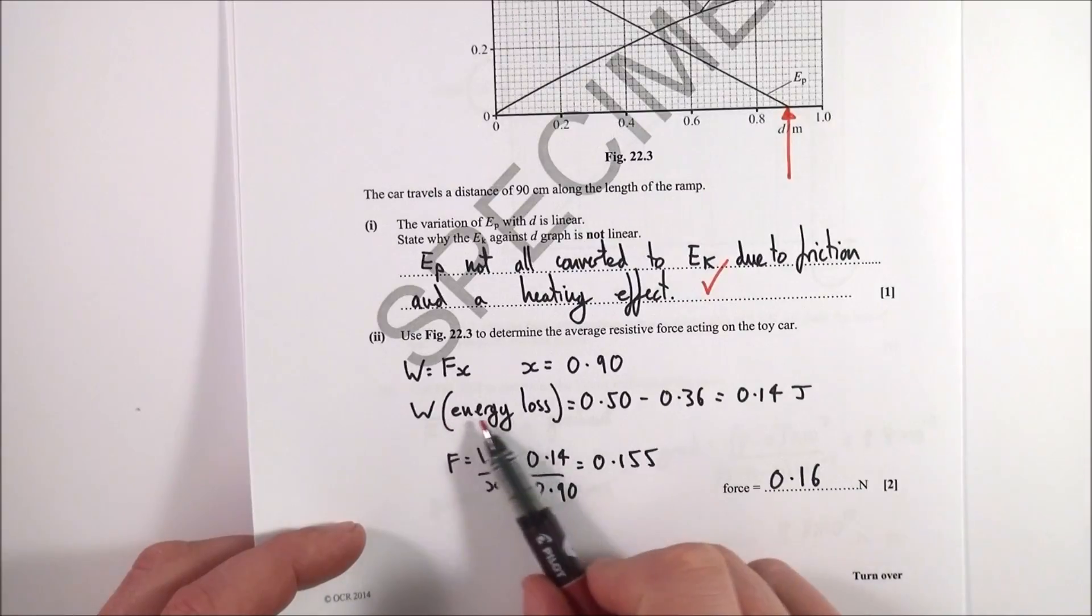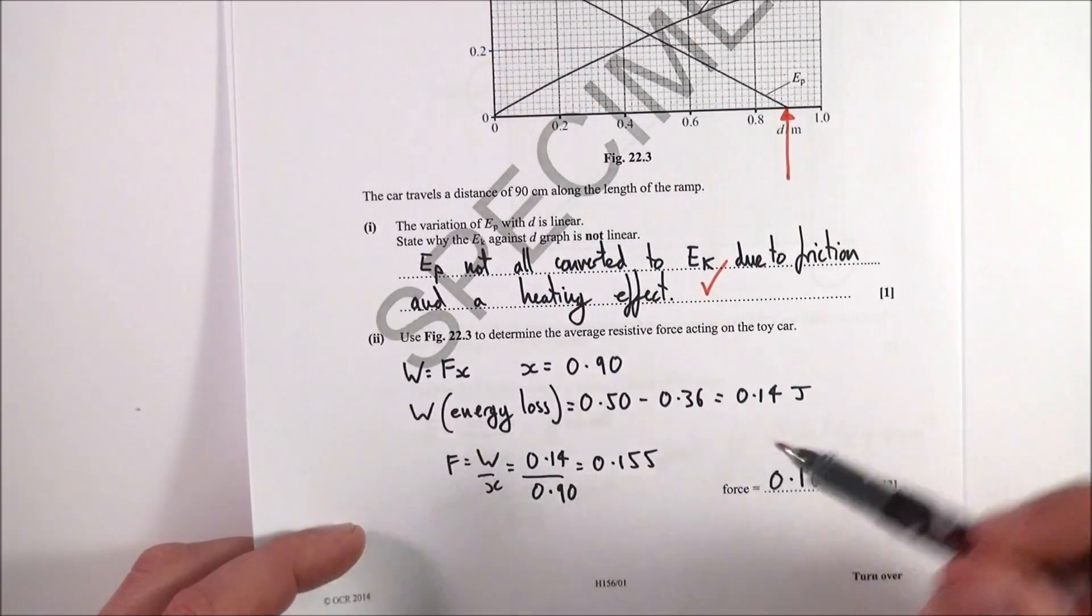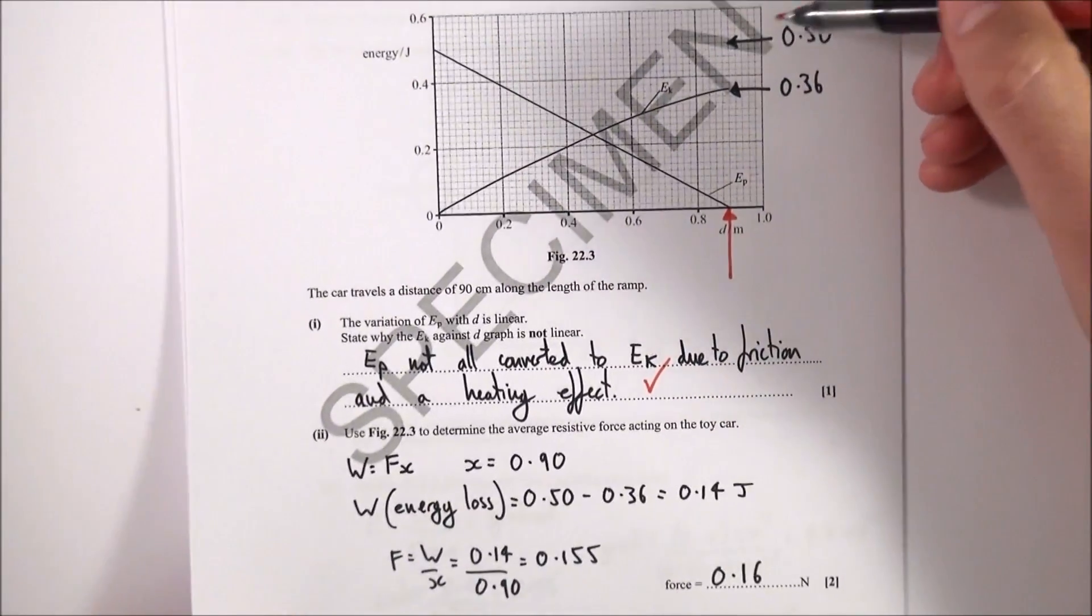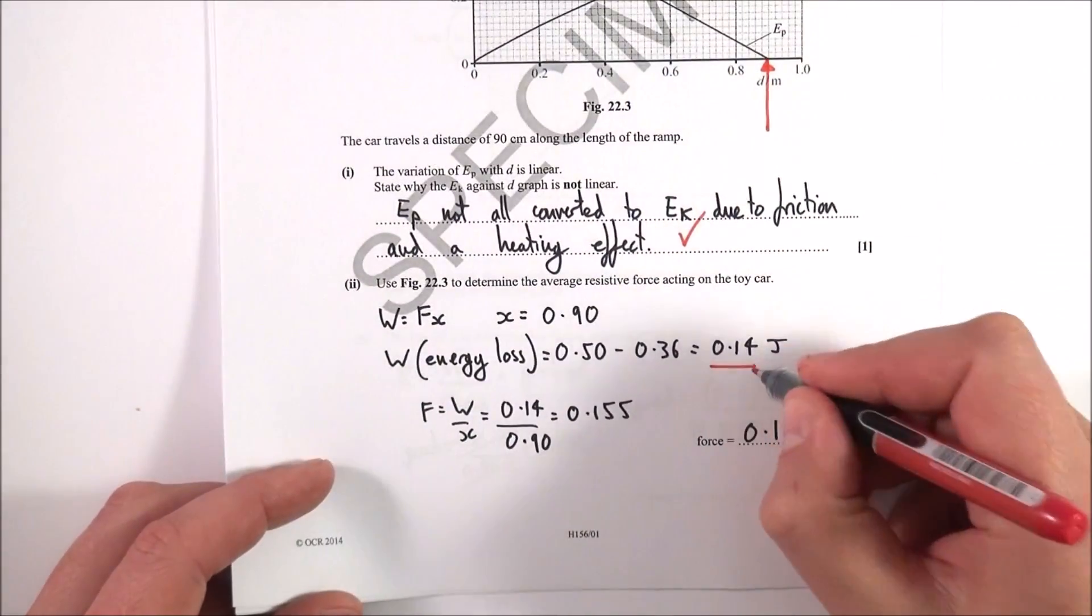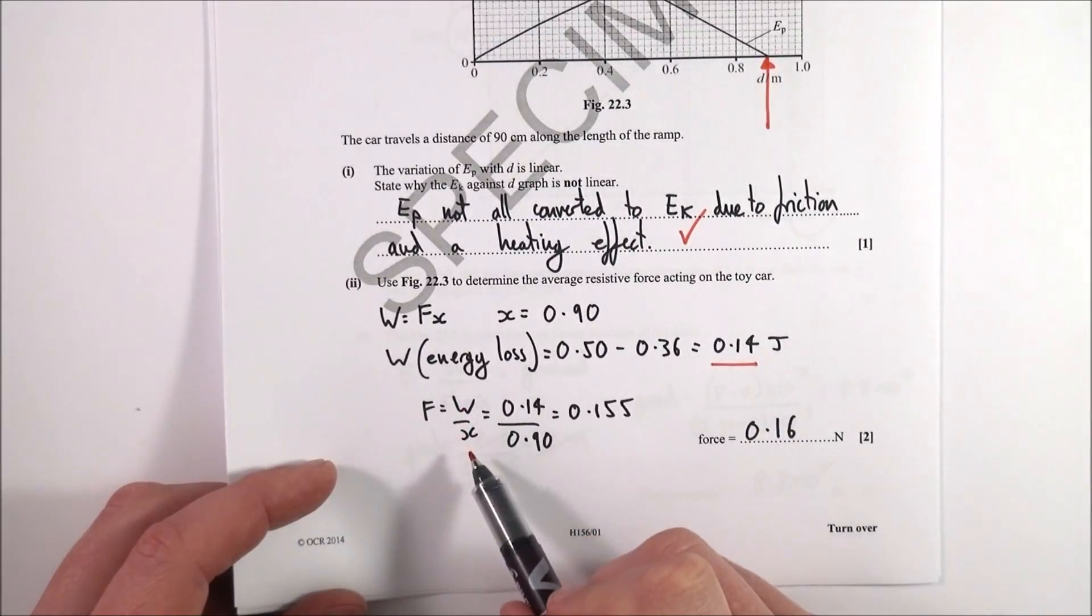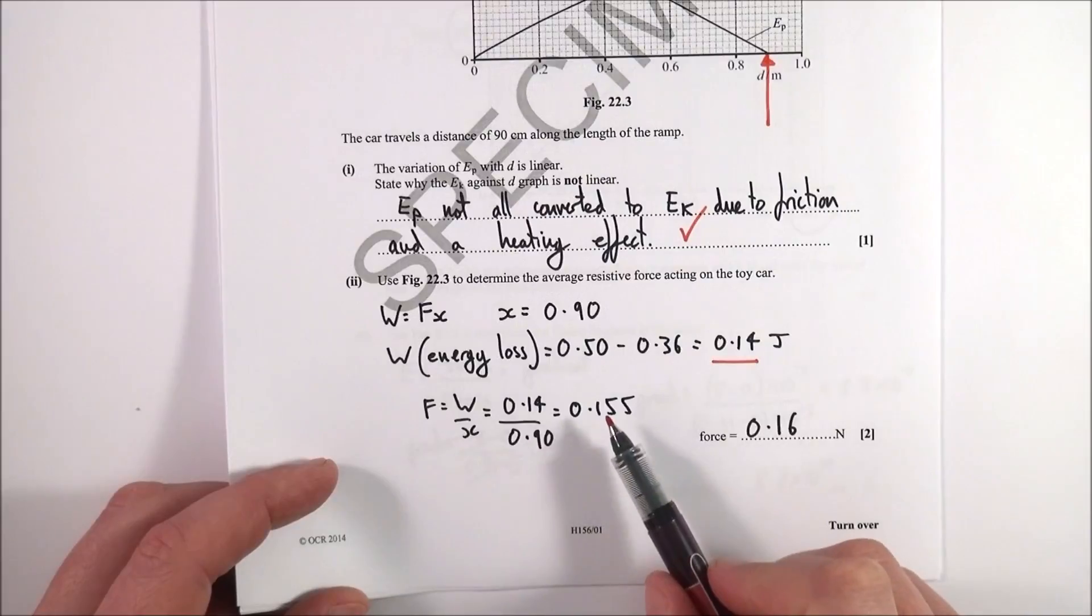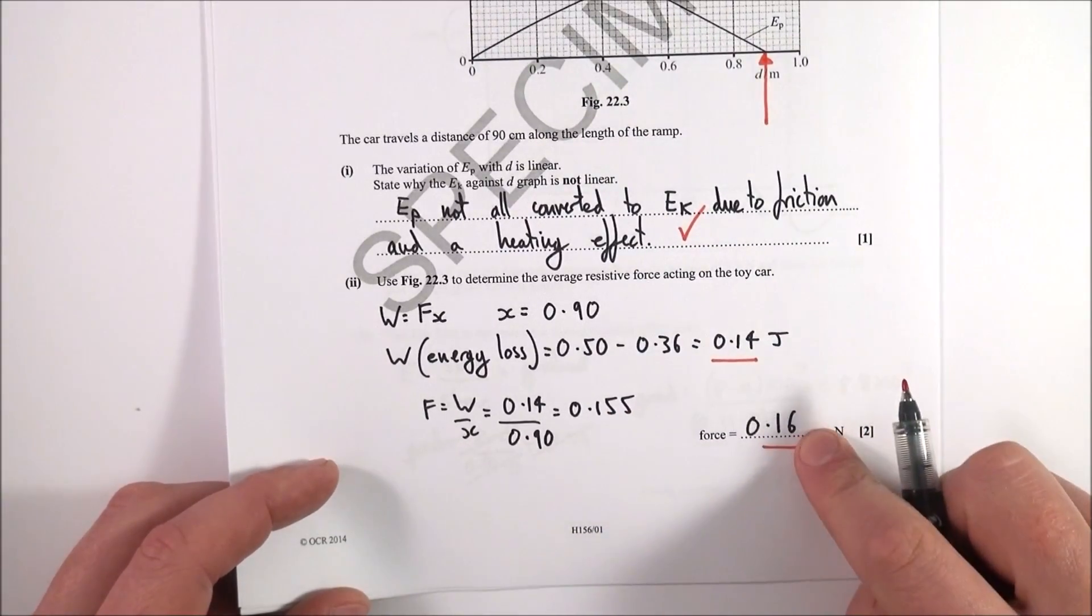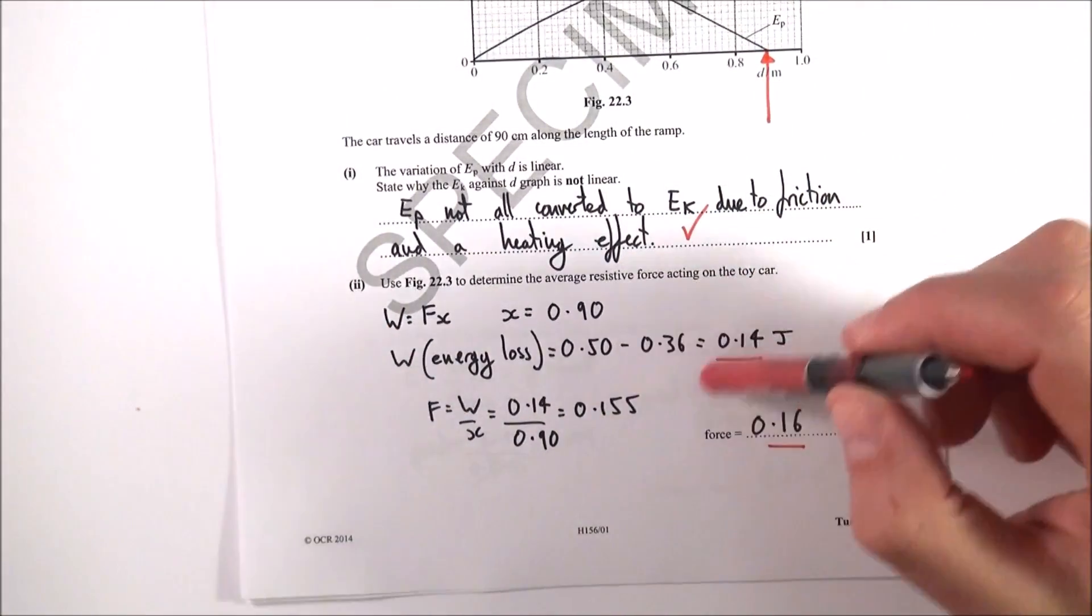That means the energy losses must be equal to the work done against resistive forces. So effectively at the start it had 0.50 joules, and at the end it had 0.36 of a joule, so it lost in total 0.14 of a joule. So we know that the force is equal to the work done divided by the distance, so 0.14 over 0.9 to give a value of 0.1555. And again, I've given that to two significant figures as my final answer. So this one here, lots of bits of physics involved, and this just comes from doing more and more practice of many questions.